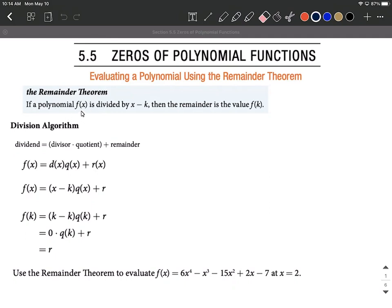So if this polynomial f of x is divided by x minus k, and I know this can be confusing with a bunch of letters floating around, but visualize this as k is just some number.